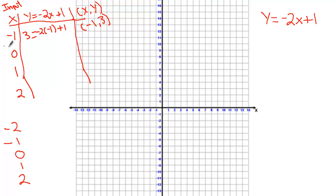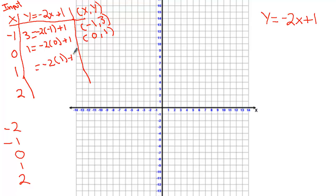Now we substitute zero: negative 2 times 0 plus 1 — negative 2 times 0 is 0, plus 1 gives us a value of 1. The ordered pair is 0 comma 1. Then putting 1 in for x we get negative 2 times 1 plus 1 — negative 2 times 1 is negative 2, plus 1 gives us negative 1. The ordered pair is 1 comma negative 1.